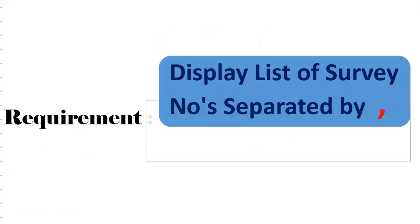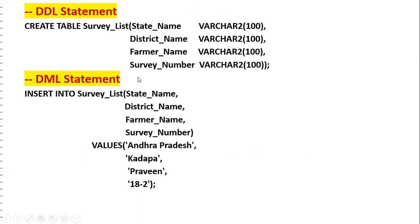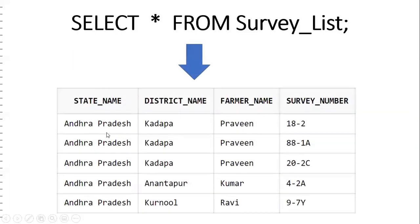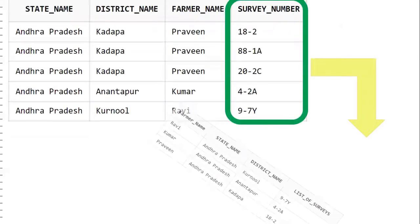Now we'll see the actual requirement. The requirement is to display the list of survey numbers separated by commas. To solve this, we need a survey list table — a DDL statement and a DML statement for dummy data. I'll insert some records. If I select from survey list, there are five records. For Praveen, there are three records with three survey numbers for the particular district. For Kumar and Ravi, there is only one record each.